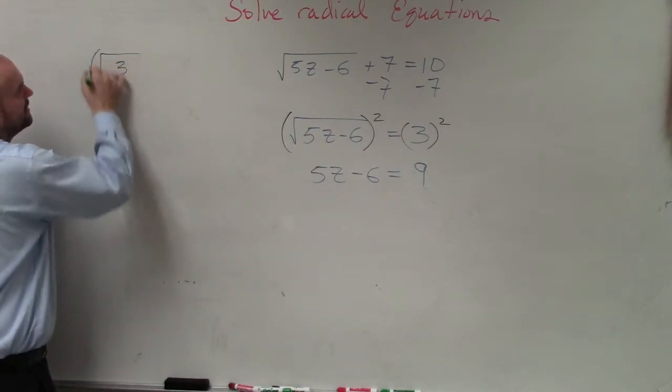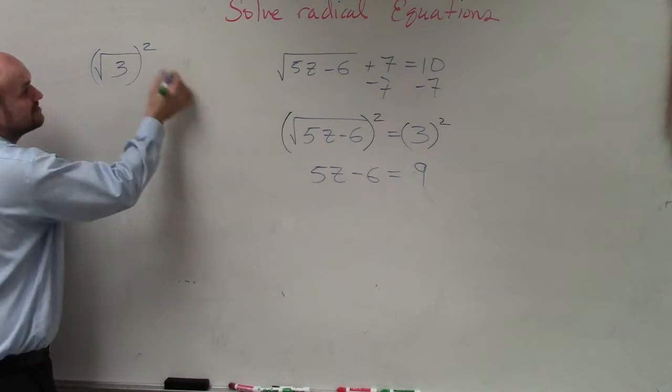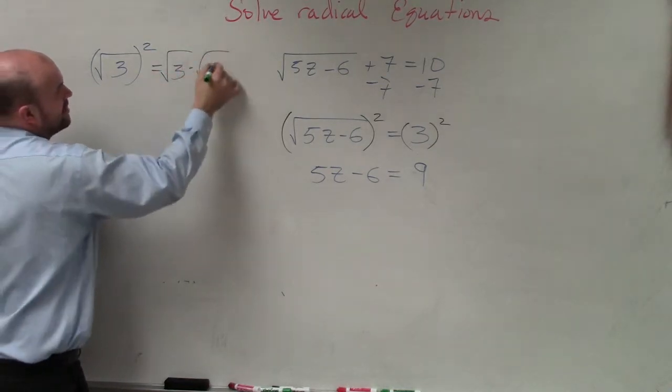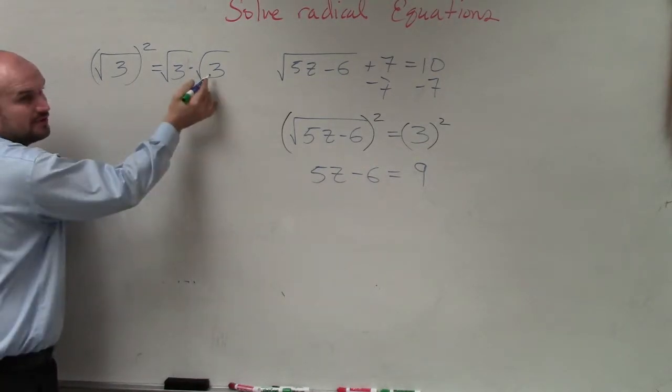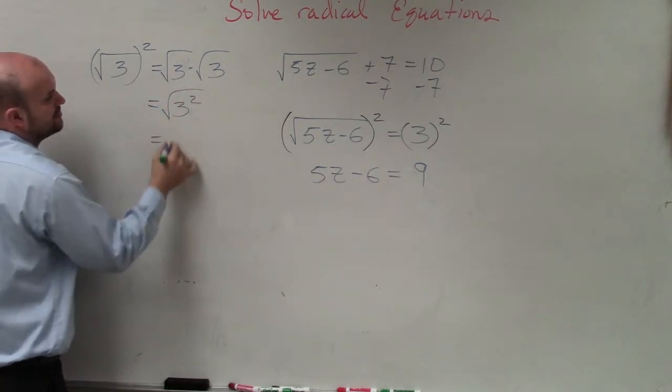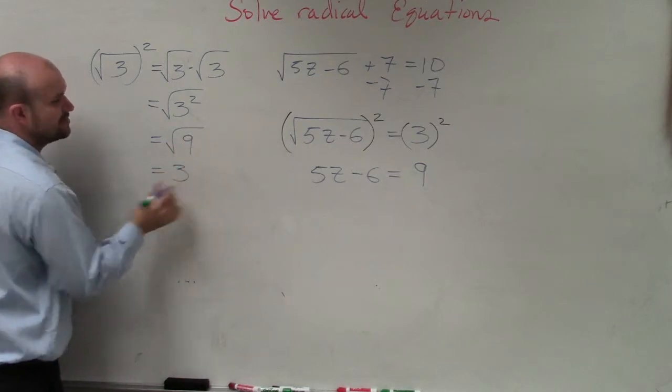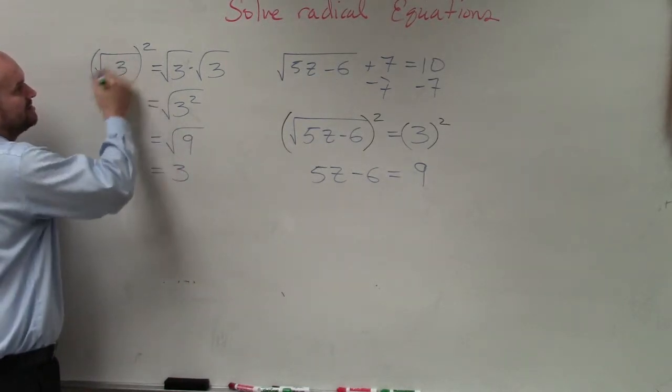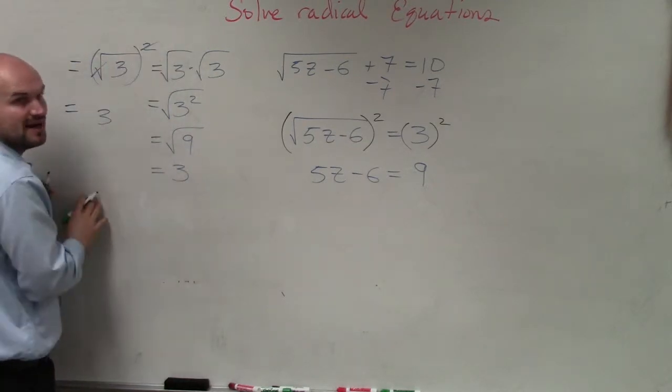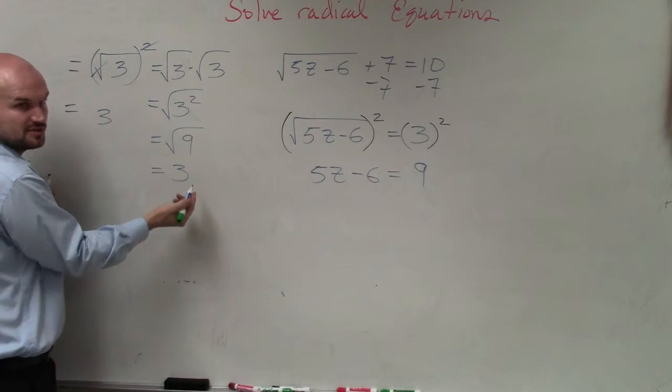If I did the square root of 3 squared, what does this really mean? It really means the square root of 3 times the square root of 3. Well, what's the square root of 3 times the square root of 3? It's the square root of 3 squared, which is equal to the square root of 9, which is just equal to 3. So really, all this does, it just equals 3. These just cancel out or undo each other, so it just equals 3.